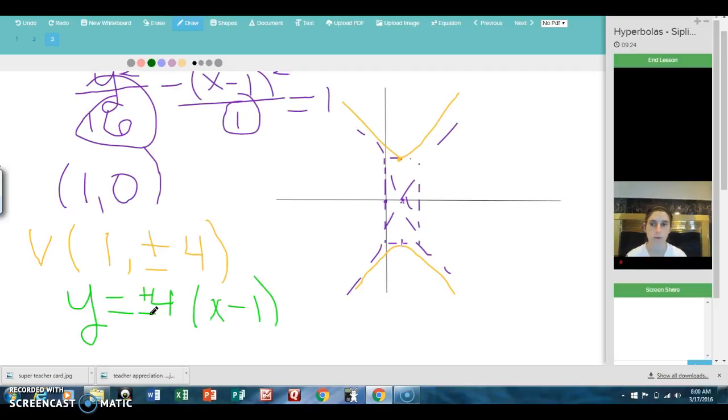Now, one thing that we didn't talk about earlier would be where the foci go for these graphs. So, on this guy, to find the foci, we use the formula a squared plus b squared equals c squared. It's the Pythagorean theorem. For an ellipse, we use a squared minus b squared equals c squared. But for the hyperbola, we use the plus. So, in this problem, we have one plus 16 equals c squared.